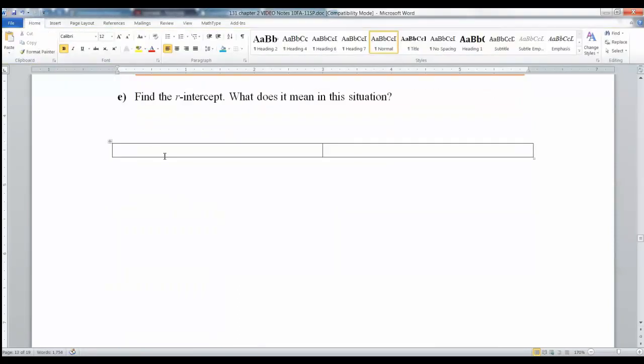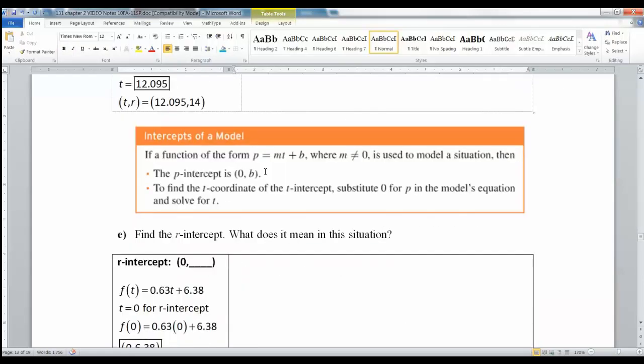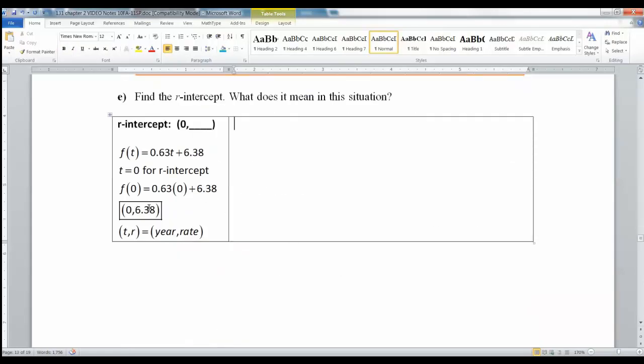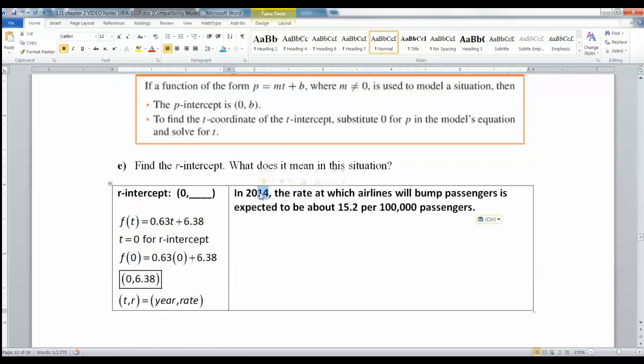So this is all the work to come up with it. And honestly, r-intercepts, the y-intercepts are so easy - you can tell it's 6.38 just by looking at the equation. But what does it mean? You have to explain both numbers. You have a 0 and a 6.38, and you've got to explain both of them. So in what year is this? It's in 2000, because that was your starter year. The rate at which airlines were bumping passengers was about 6.38 per 100,000.